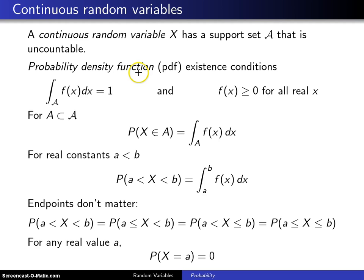The probability density function, pdf is the usual abbreviation, has existence conditions. The first existence condition is the probability density function must integrate to 1. You remember in the discrete case all probability mass functions had to sum to 1. And also f of X is greater than or equal to 0 for all real X.